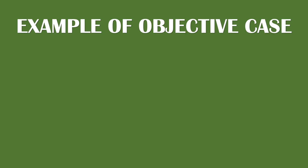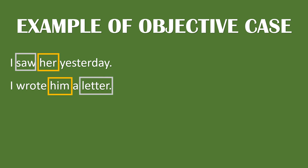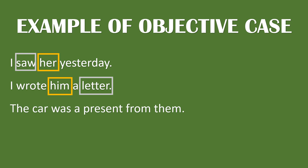Example of objective case: 'I saw her yesterday.' Here, 'her' is the direct object of the verb 'saw.' 'I wrote him a letter.' Here, 'him' is the indirect object of the verb 'wrote,' and 'him' is the recipient of the letter, which is the direct object. 'The car was a present from them.' Here, 'them' is the object of the preposition 'from'.